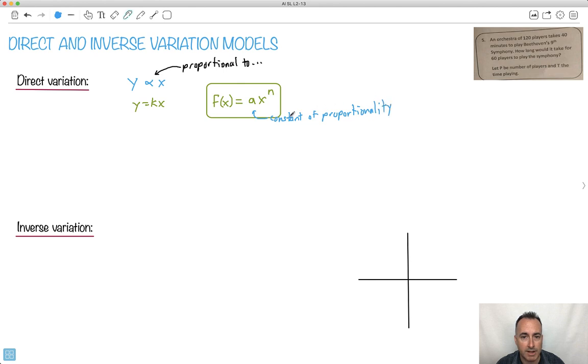So maybe you need to find an inverse variation. Well, how does that work? We could say this is proportional to 1 over x. So we could write f(x) equals, there's going to be some constant, we'll call it a, over x, but we can make it to the power of n.